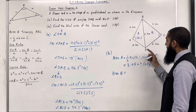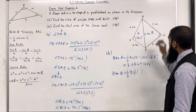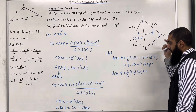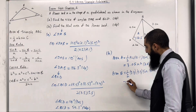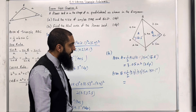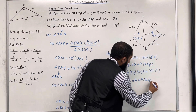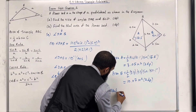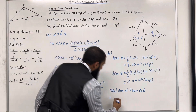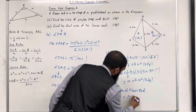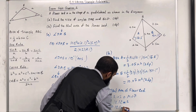Now working out area B — the area of triangle BCD. Using one half AB sine C: one half multiplied by 3.5 multiplied by 7.5 multiplied by sine of angle C. Angle C was calculated to be 50.1 degrees, so we have sine of 50.1 degrees. Putting this into the calculator and rounding to two decimal places gives 10.07 metres squared. So the total area of the flower bed equals area A (3.05) plus area B (10.07), which equals 13.12 metres squared, or 13.1 metres squared to one decimal place.